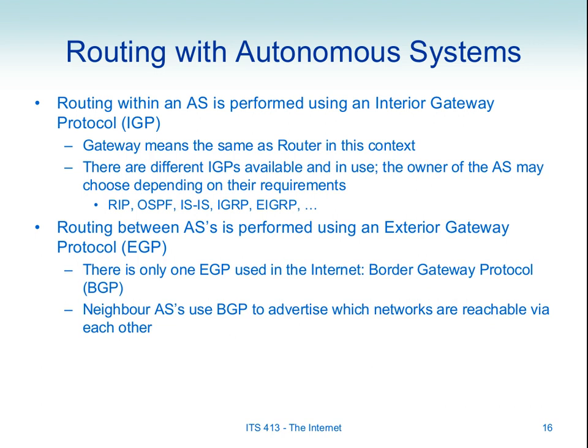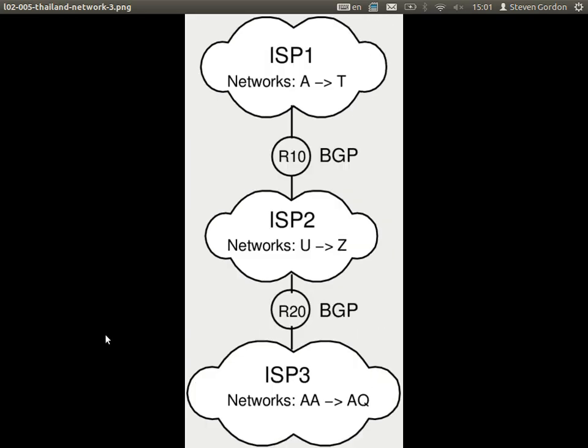Thammasat University has its own autonomous system. Let's say they choose to use OSPF inside TU's network. But then between TU and True Internet, we use BGP to exchange information. Although we don't use letters to identify networks — that's just a simplification. What do we use to identify subnets? We use an IP address and the subnet mask.